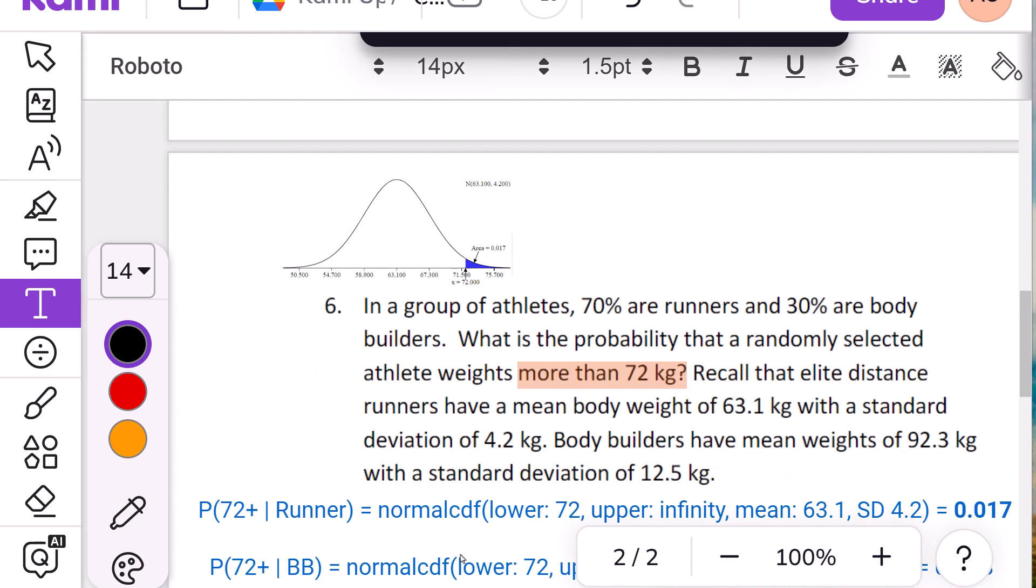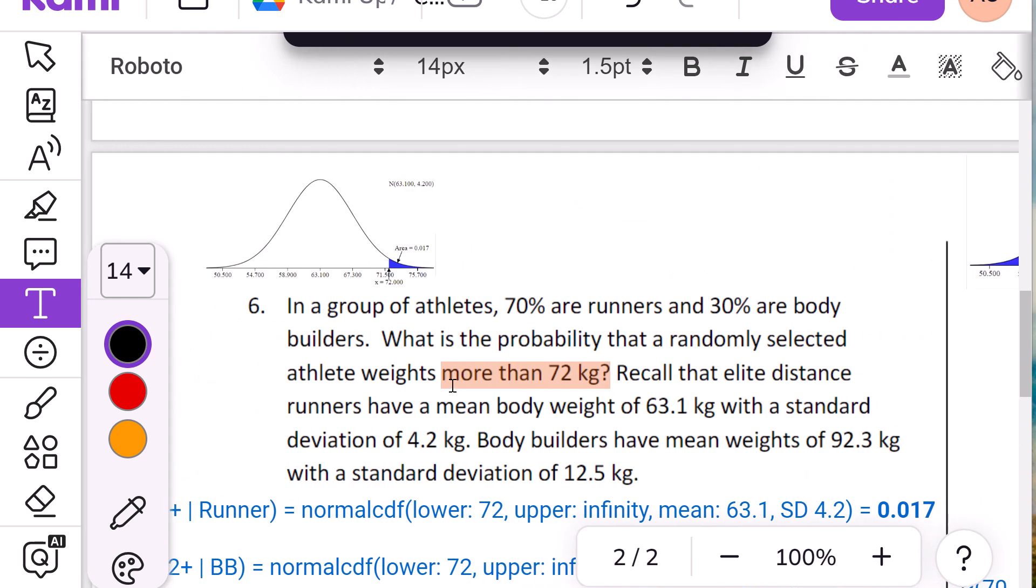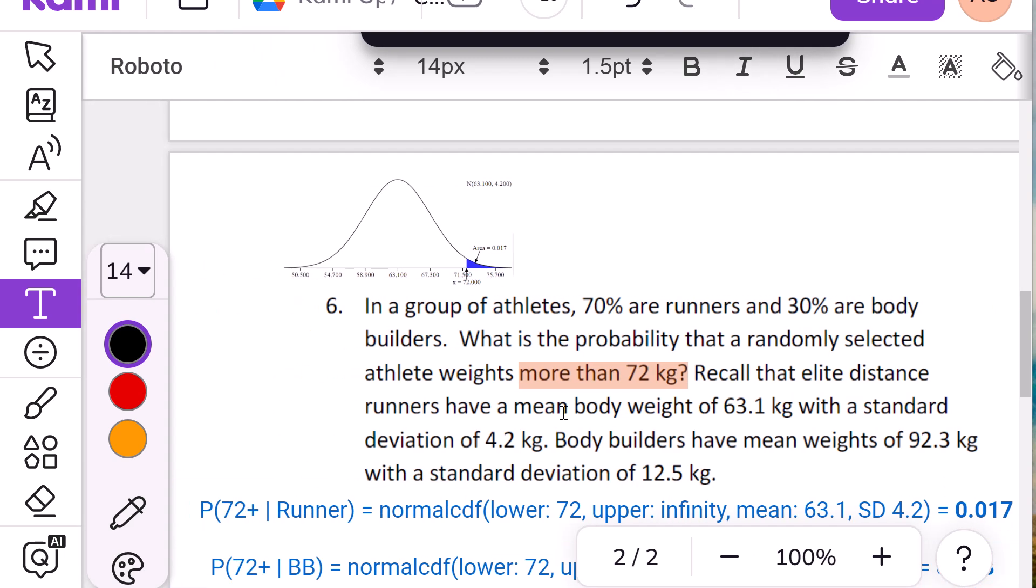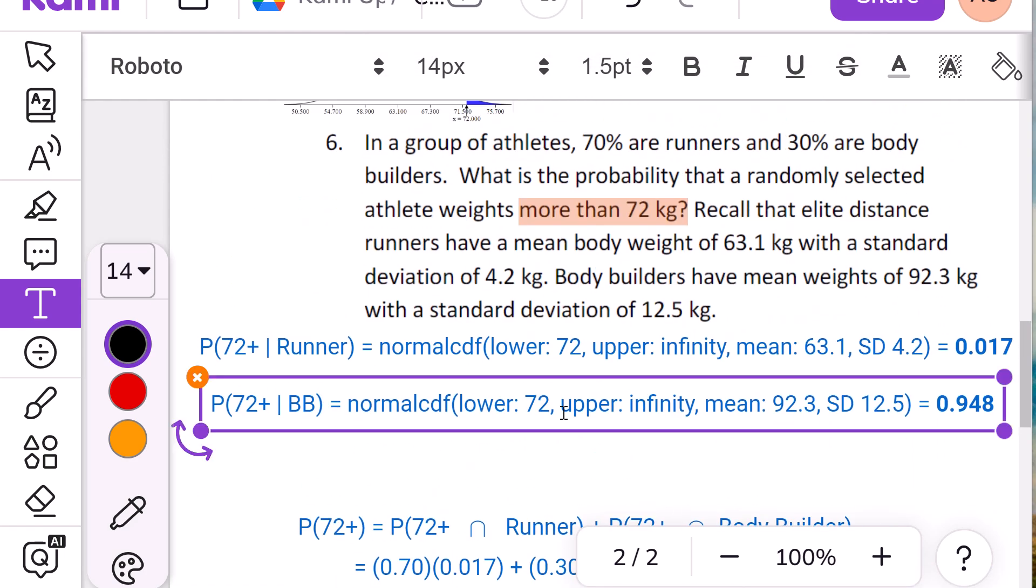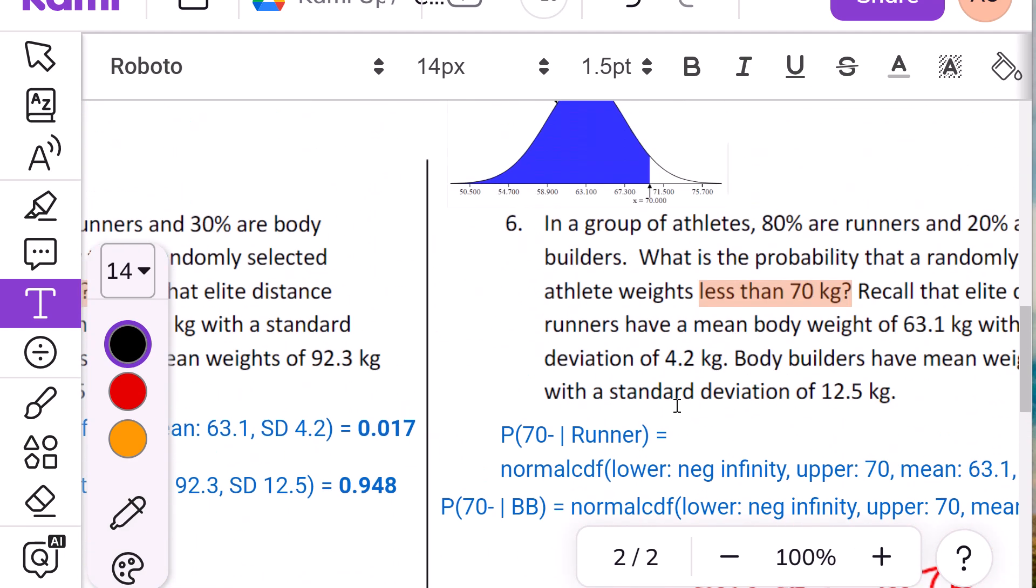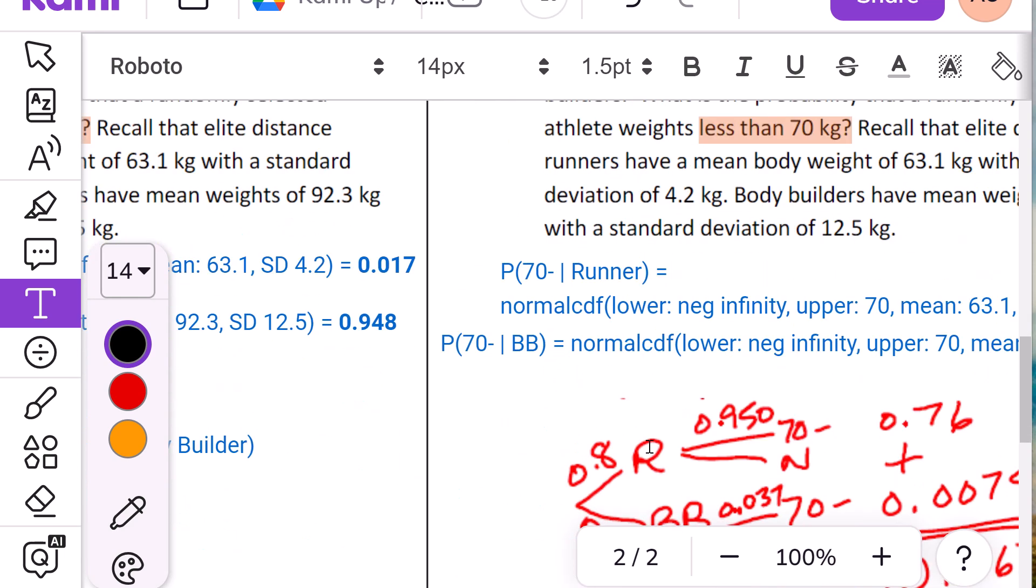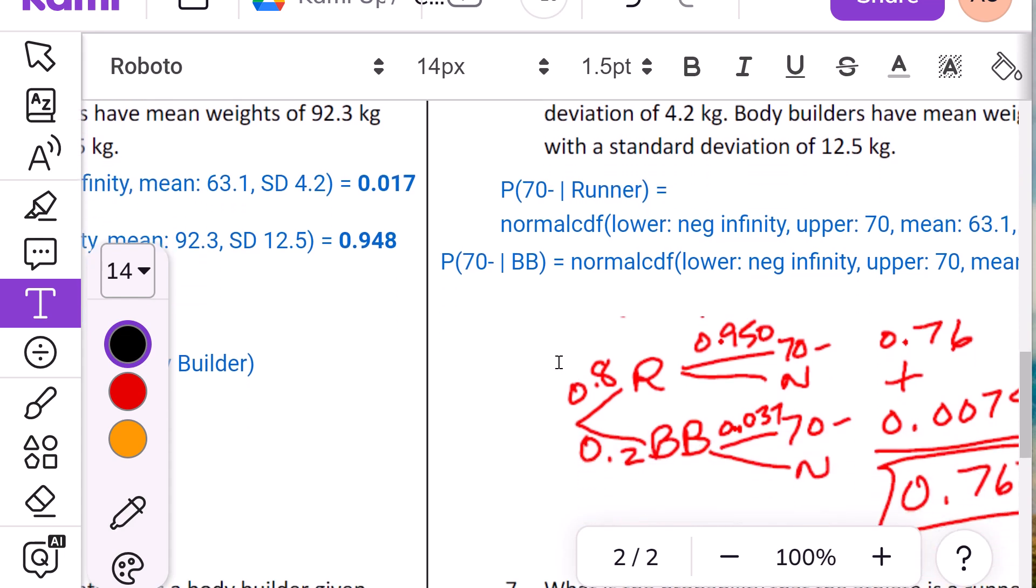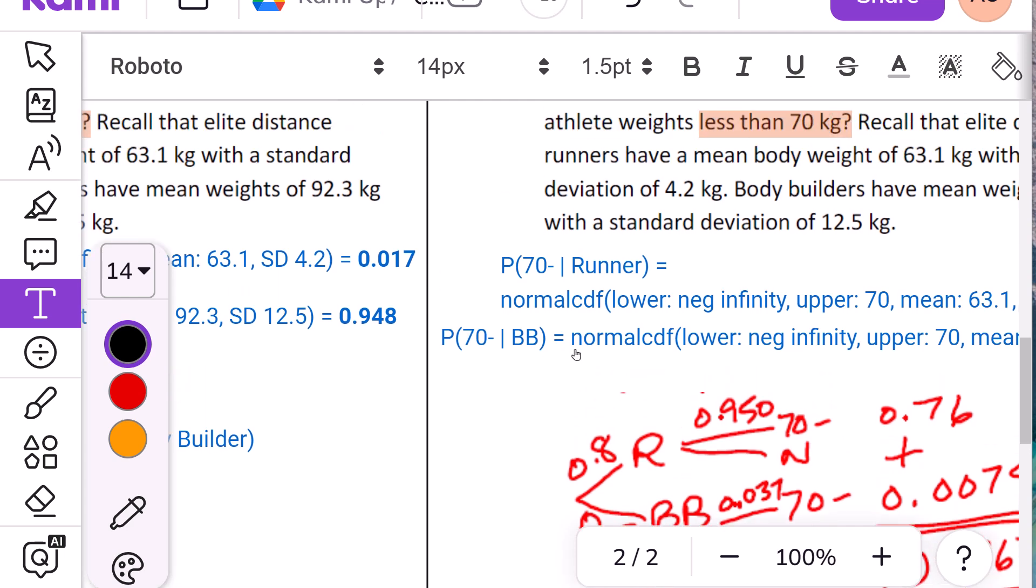In a group of athletes, 70% are runners and 30% are bodybuilders. What is the probability a randomly selected athlete weighs more than 72 kilograms? So the thing that you have to do is that you can do a tree. And I like trees. In fact, I got a tree there. And I think both of these are runners. So we have the same numbers. So if we're doing a tree, one thing we know beforehand is the probability they're runners or bodybuilders.